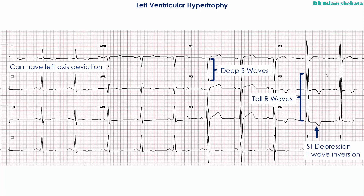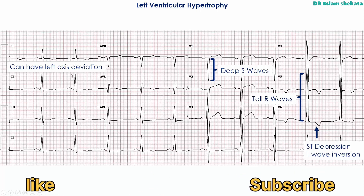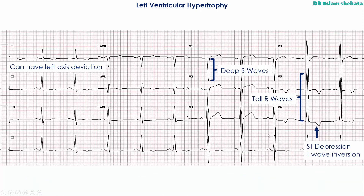So the features of left ventricular hypertrophy: high voltage QRS complexes — we've got deep S-waves in V1, tall R-waves in V5 and V6. You can have a left axis deviation, and you get this left ventricular strain pattern — that's ST depression and T-wave inversion in these left lateral leads like V5 and V6.